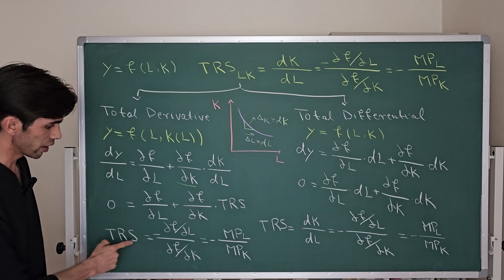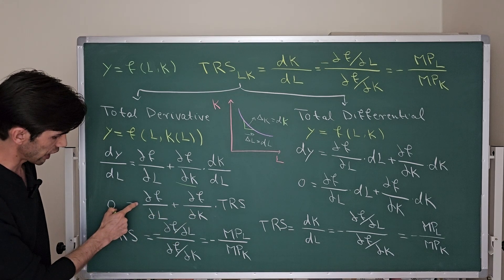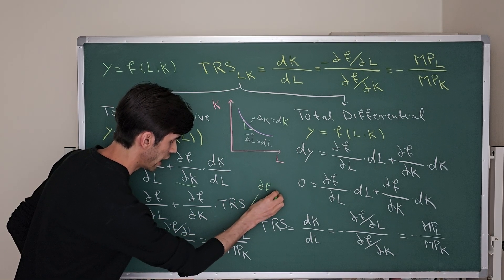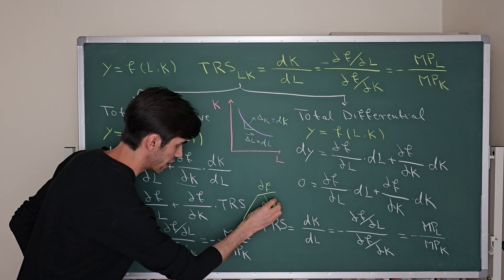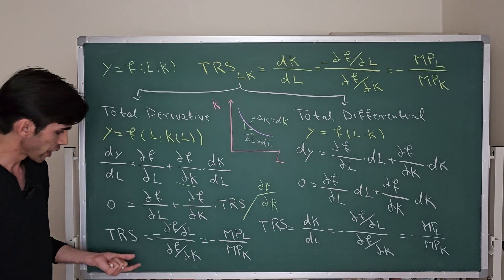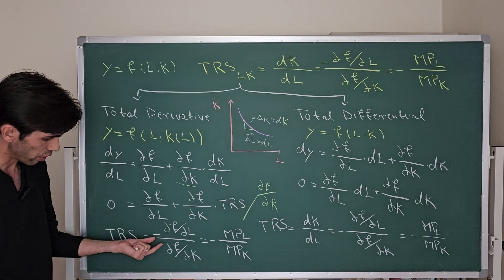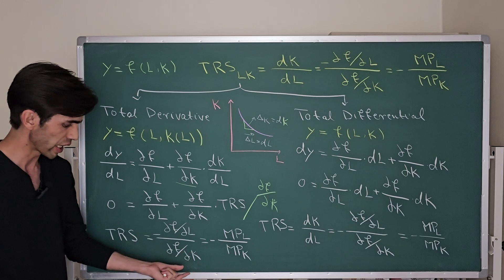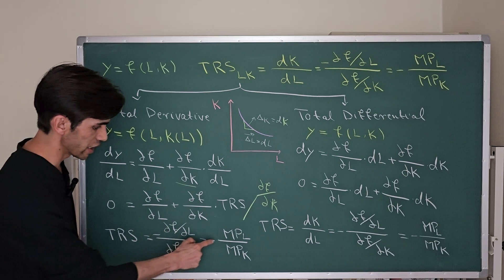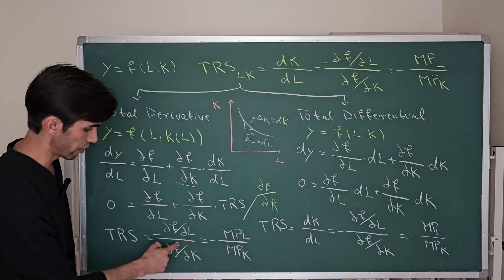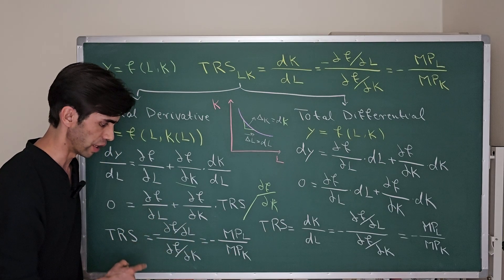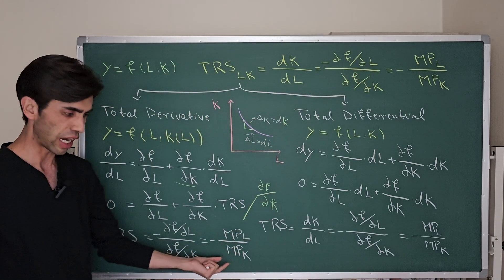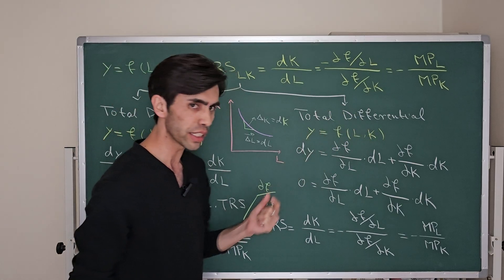If we move TRS to one side of the equation and the other term to the other side, we take the negative sign and divide both sides by the partial derivative of f with respect to K. TRS will be equal to negative partial derivative of f with respect to L over partial derivative of f with respect to K. Since the partial derivative of f with respect to L equals marginal productivity of labor and partial derivative of f with respect to K equals marginal productivity of capital, TRS equals negative marginal productivity of labor over marginal productivity of capital.